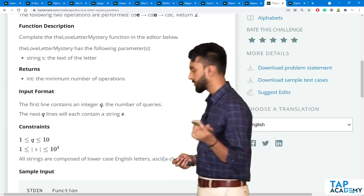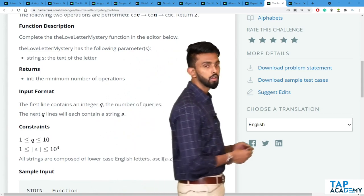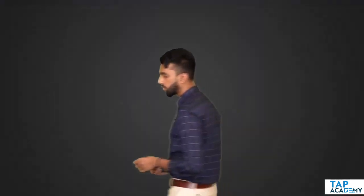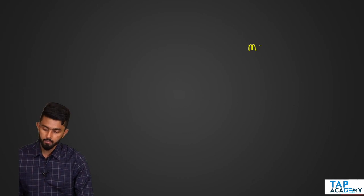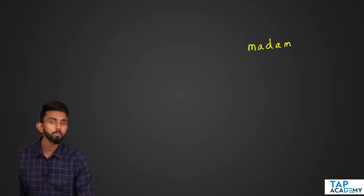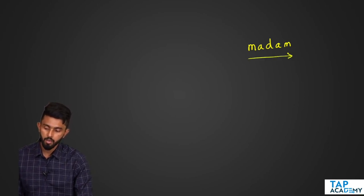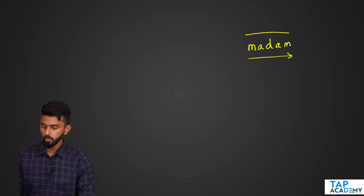Let's visualize it. First, I want to explain what a palindrome is. This is a palindrome — M, A, D, A, M. Madam is a palindrome. Read it this way, it is the same. Read it the other way, it is the same.